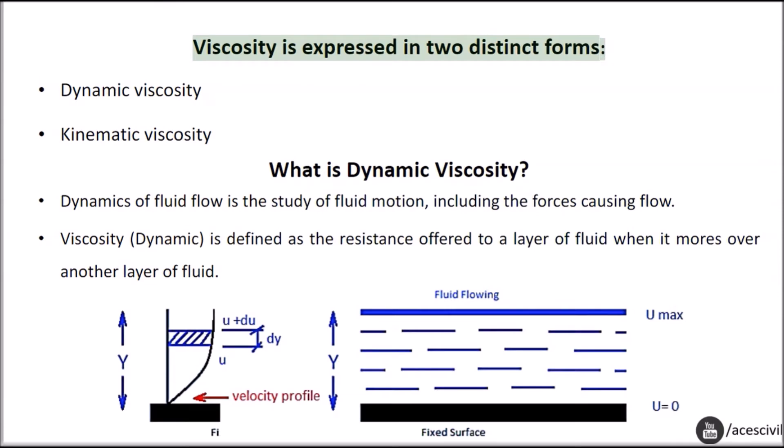Viscosity is expressed in two distinct forms: Dynamic Viscosity and Kinematic Viscosity. What is Dynamic Viscosity? Dynamics of Fluid Flow is the study of fluid motion, including the forces causing flow. Dynamic Viscosity is defined as the resistance offered to a layer of fluid when it moves over another layer of fluid.